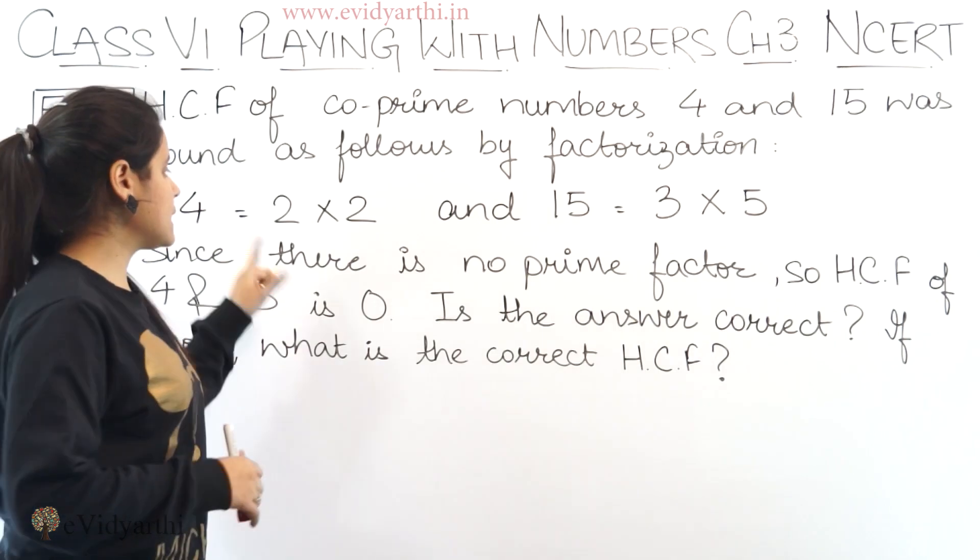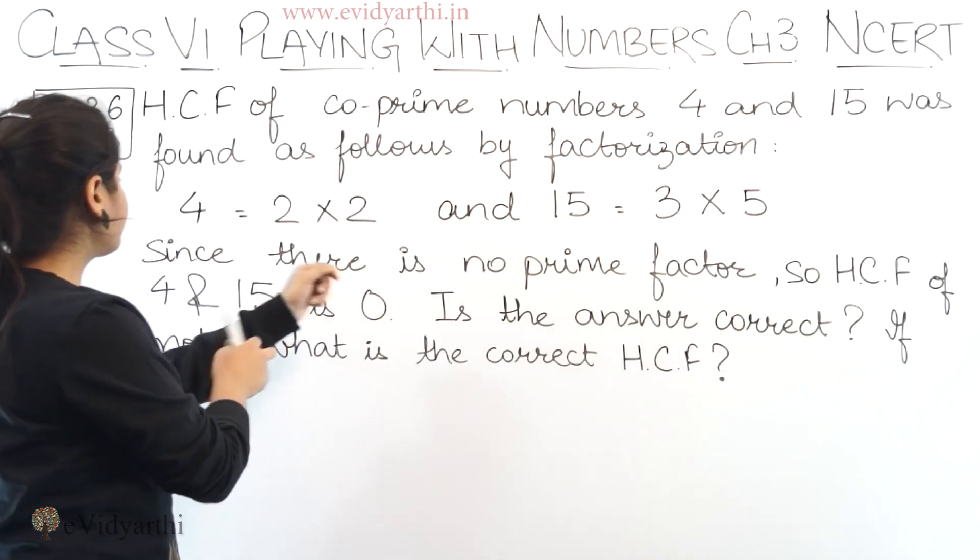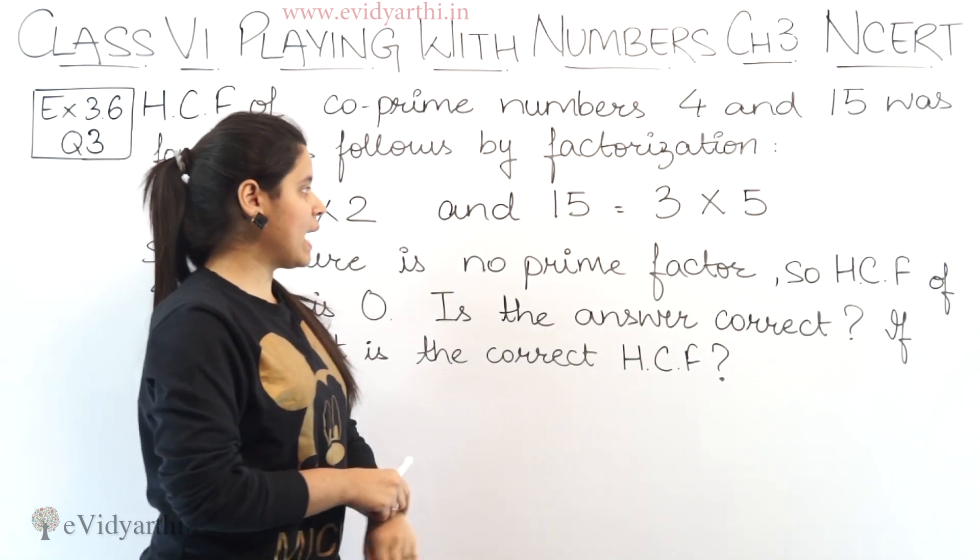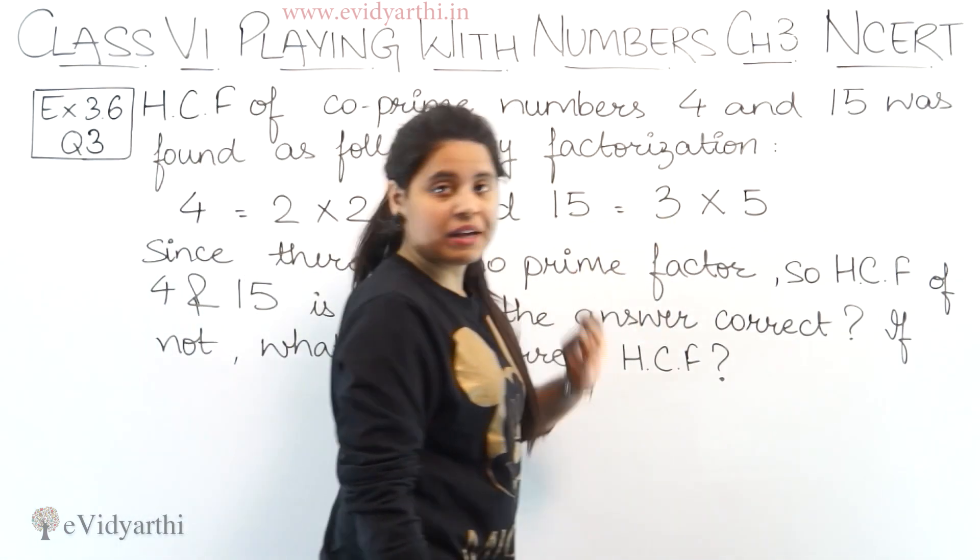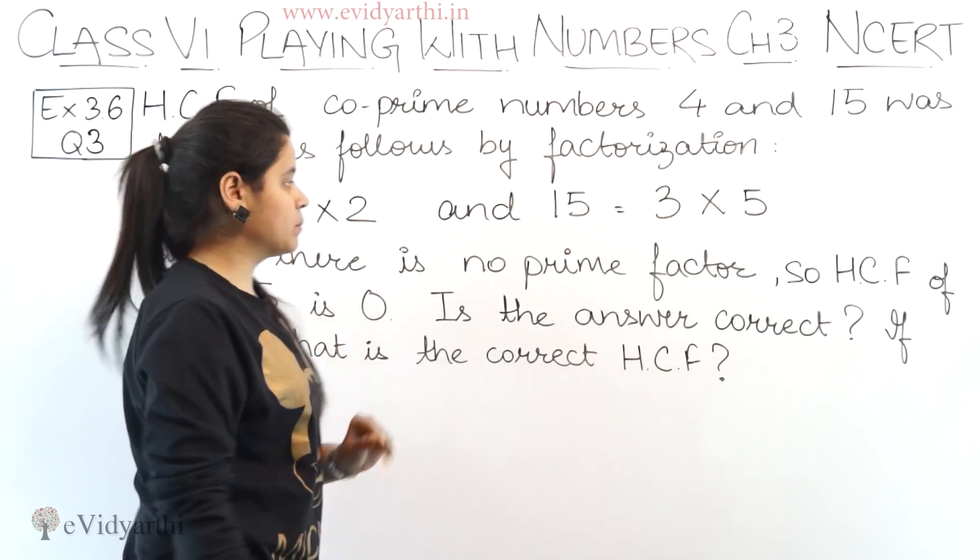Now factorization ki method se the factors are written. 4 ke factor likhe hai 2 into 2 and 15 equals to 3 into 5 and it is given that these two are co-prime numbers.